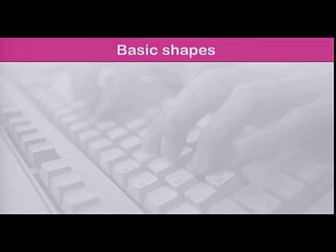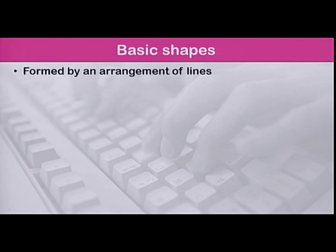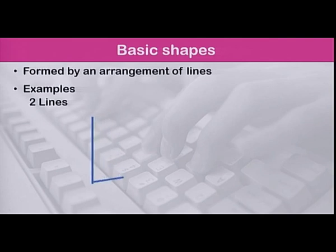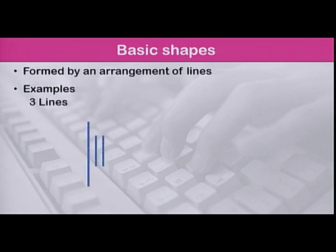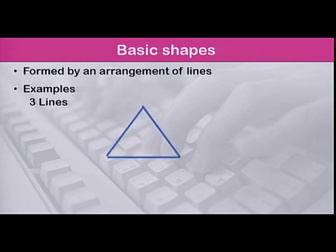Before we talk about complex shapes, let us see what we mean by a basic or simple shape. A basic shape is formed by an arrangement of lines. Here are some examples. With two lines we can form the L shape. With three lines we can form a T shape or a triangle.